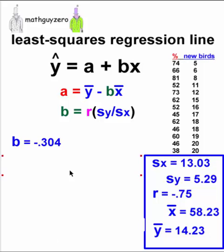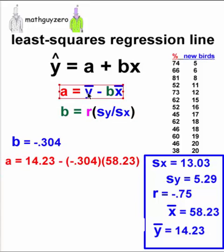Now let's go ahead and figure out what a is. A is the mean of y, 14.23, minus b, which we now know, times the mean of x, which is right here.